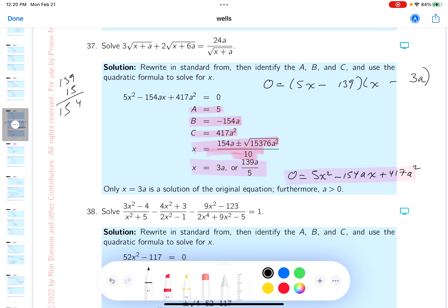It's an a there. So I got my answers: x will equal 139a over 5, or x is going to be equal to 3a.